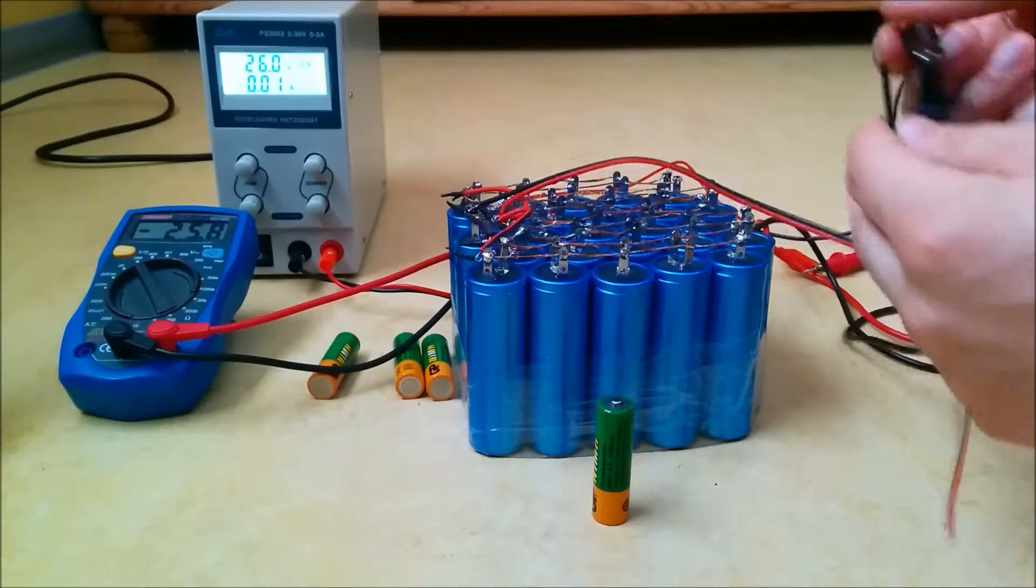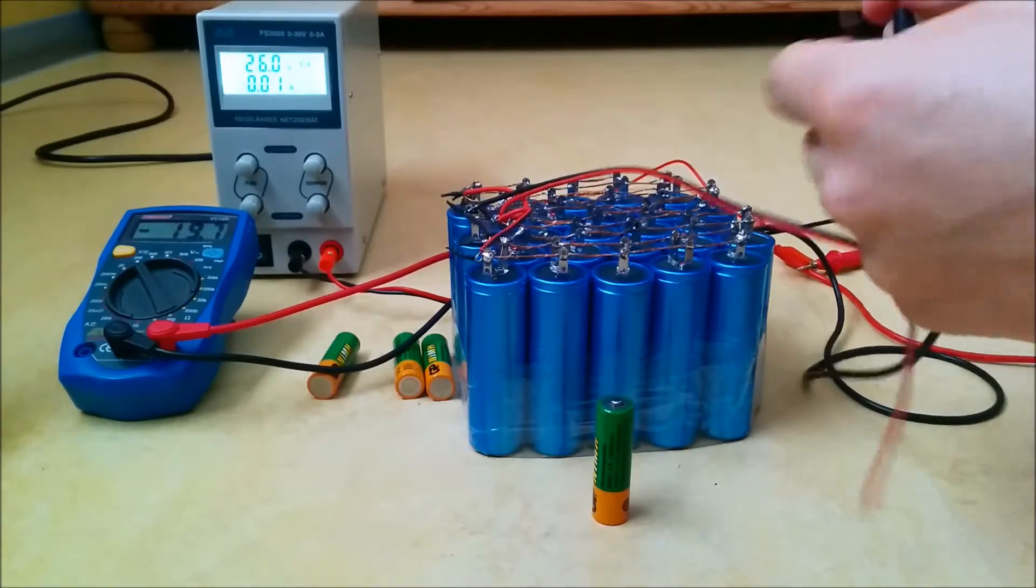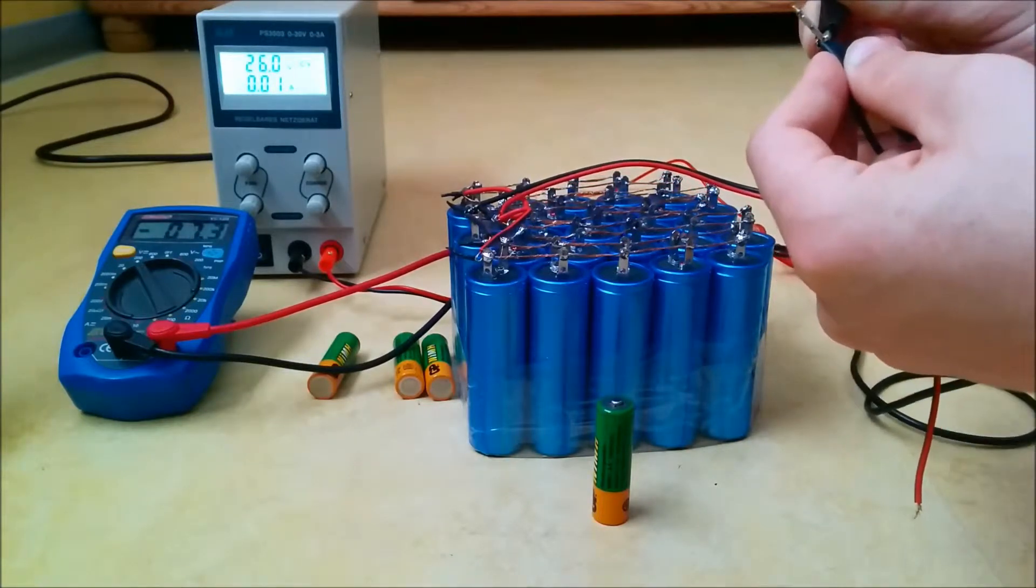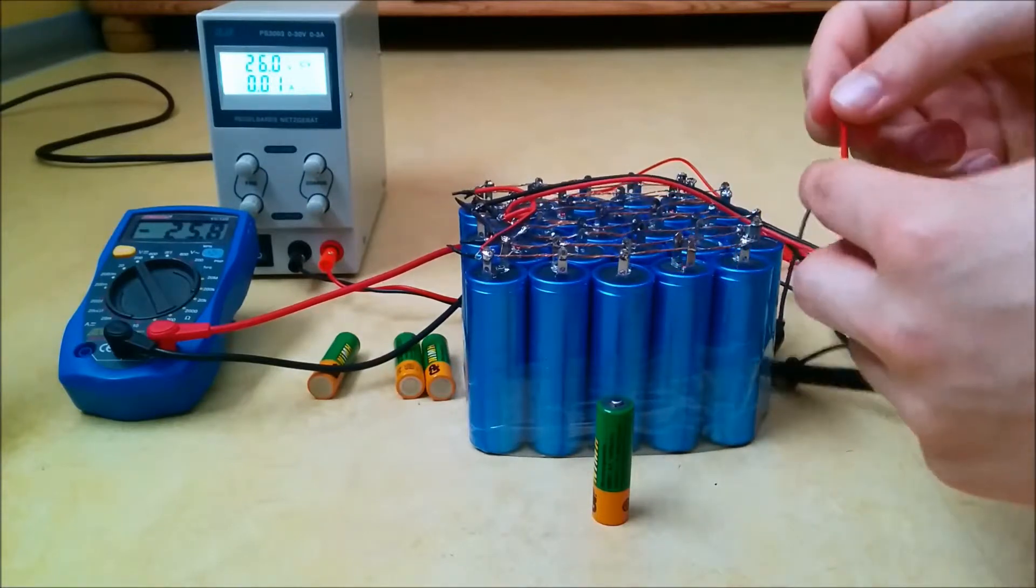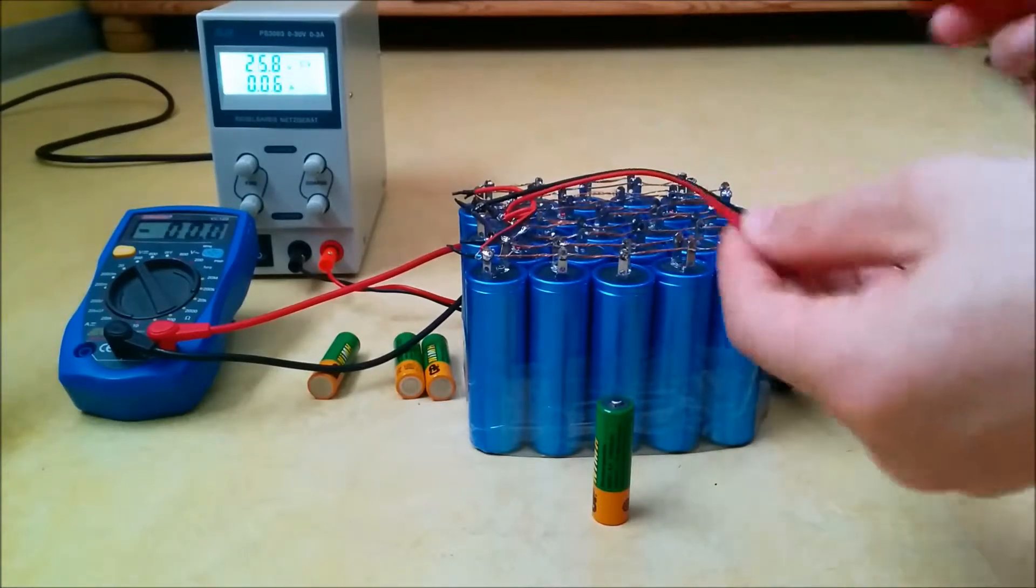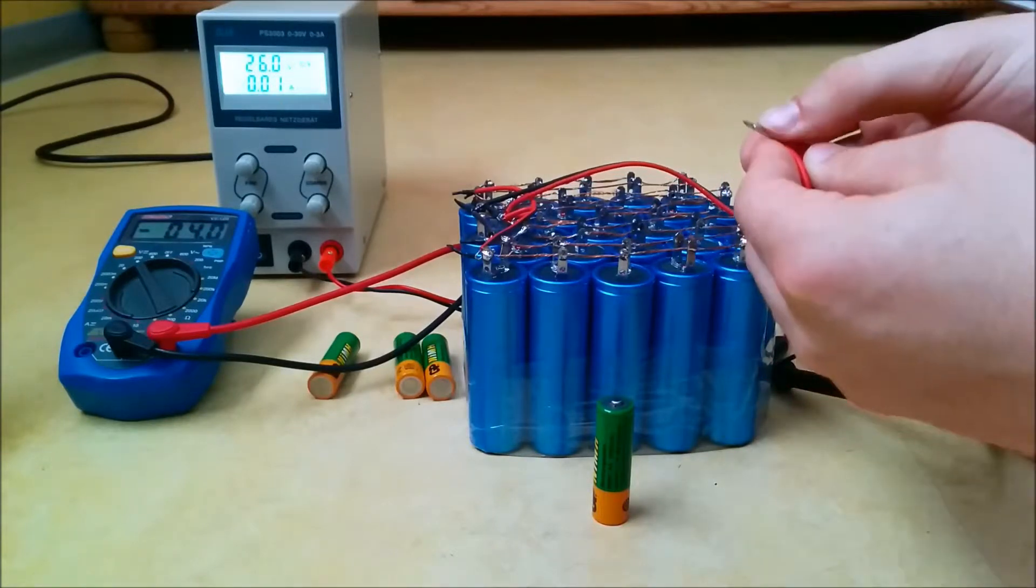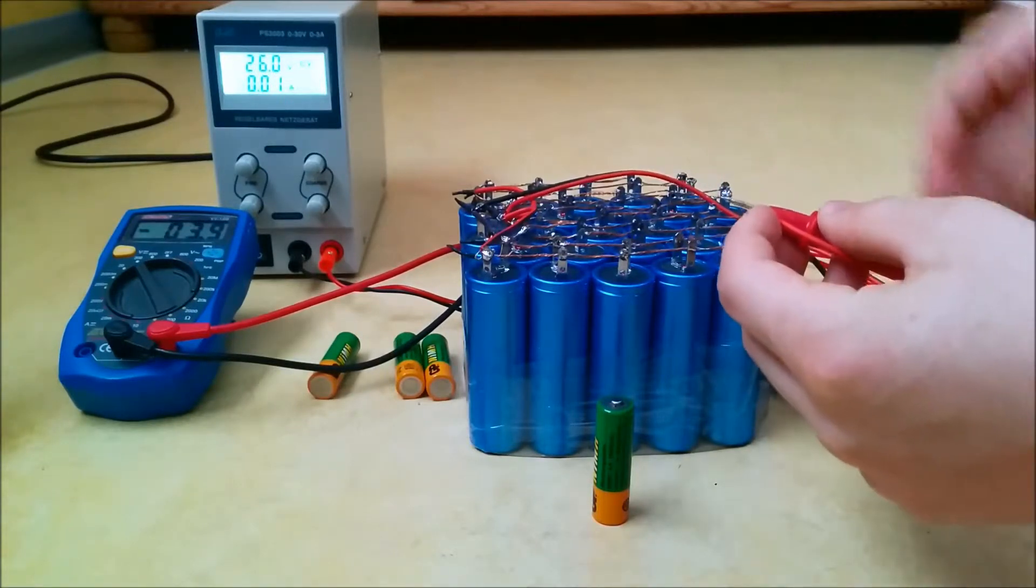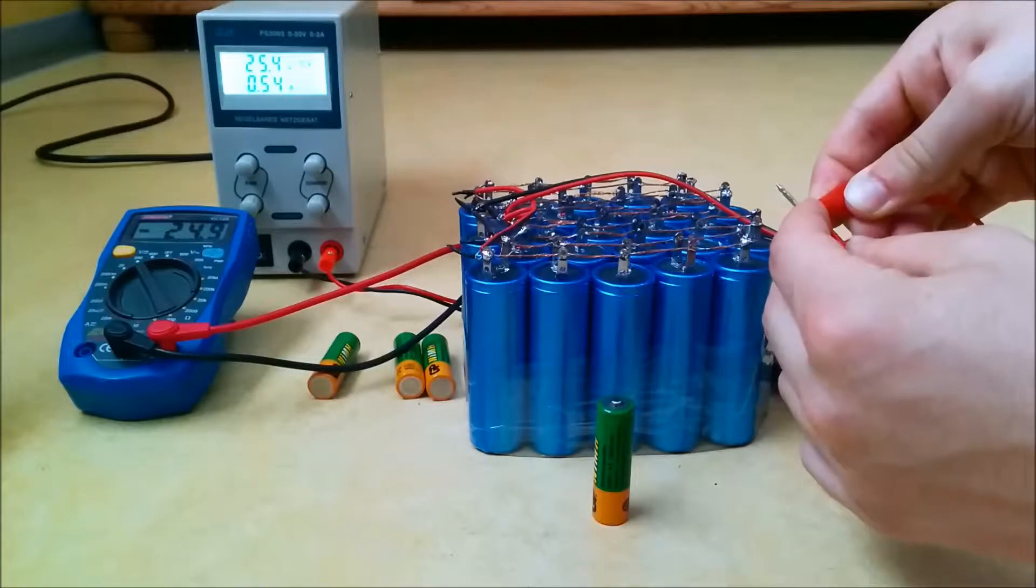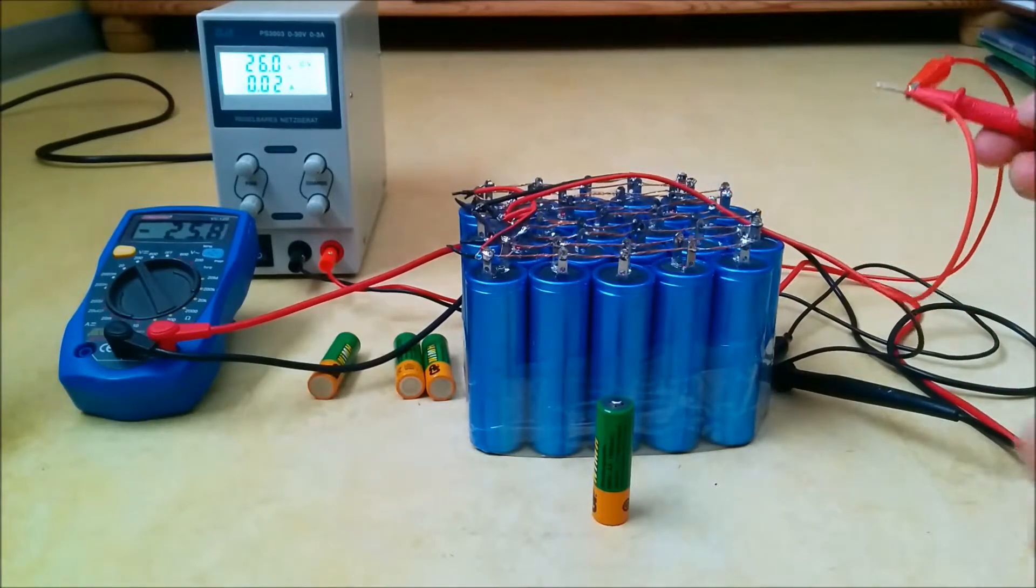Start by hooking up the capacitor bank to the terminals of our power supply. And yes, it will make kind of a small pop right now because we're charging up the capacitors and they have a very low resistance. So basically the capacitors are charged up at 25.8 volts now.